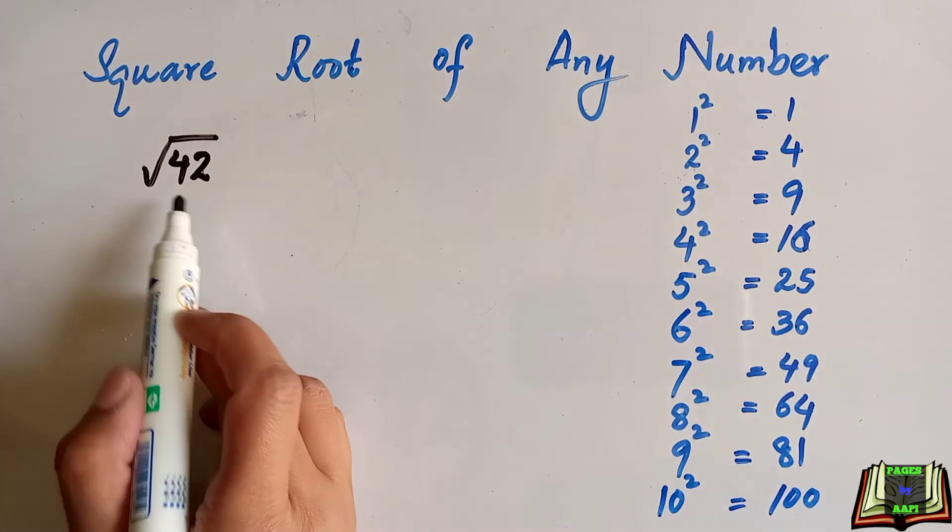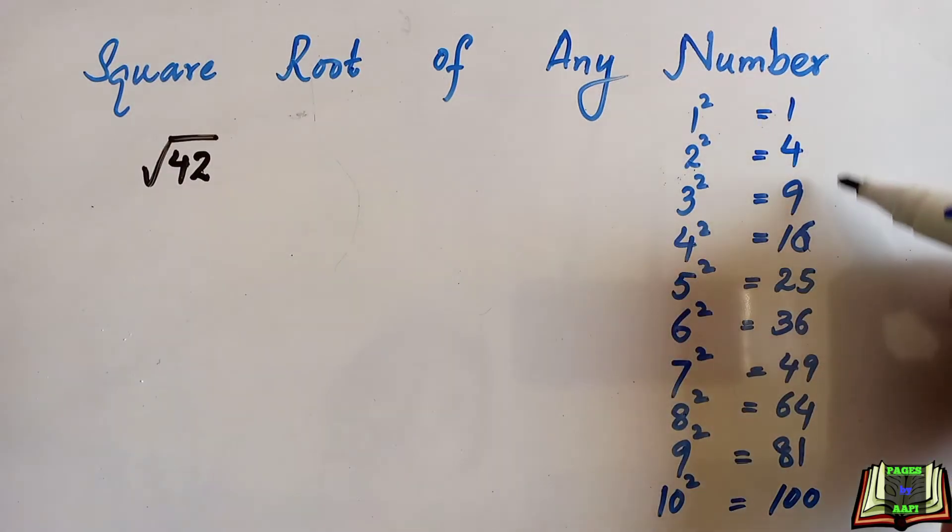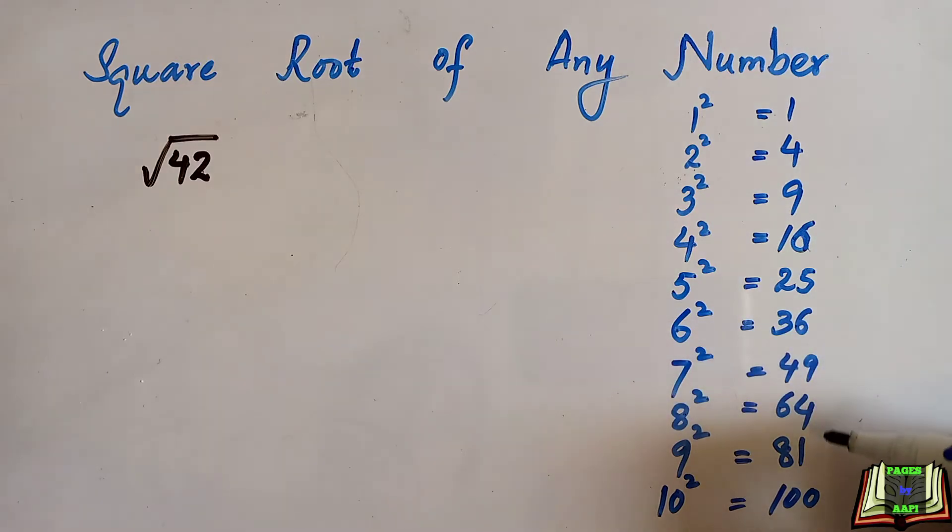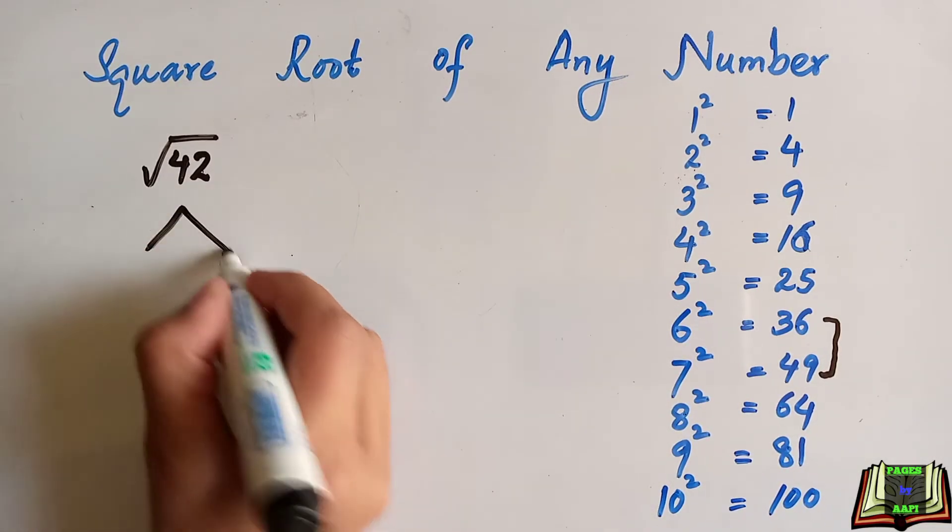Suppose we have to find the square root of imperfect number 42. I have listed here the perfect squares of numbers 1 to 10. What we have to do is find the two nearest perfect squares which are closer to 42. These are 36 and 49. I'm going to list them here.